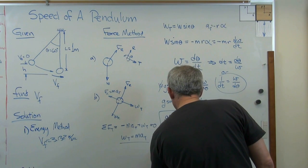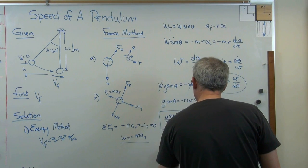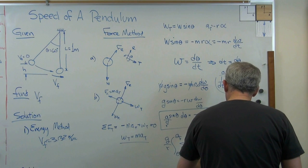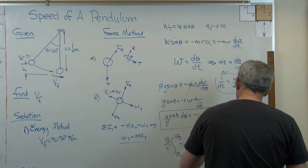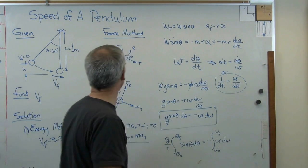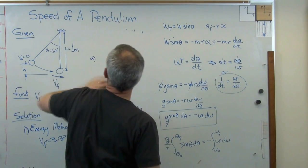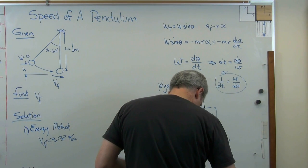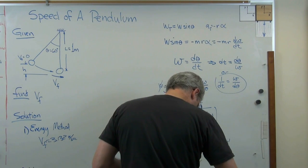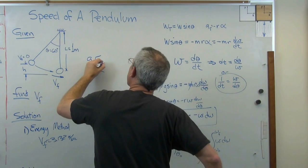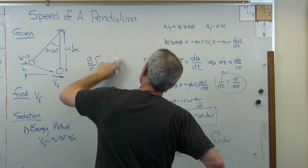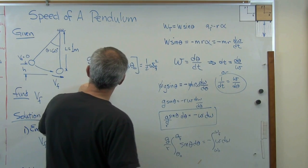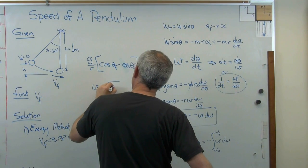What I'm going to do is this. G over R integral from theta zero to theta final sine theta d theta equals minus the integral from omega zero to omega final omega d omega. So that's the expression I've got to integrate. Now this is turning out to be kind of a long video. If you want to fast forward, that might not be bad. I'm going to erase this and make some room here. Once I start integrating, I'm going to skip a couple of steps here. And what you're going to finally wind up with is this: G over R, cosine theta final minus cosine theta zero equals one-half omega final squared.